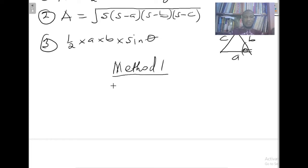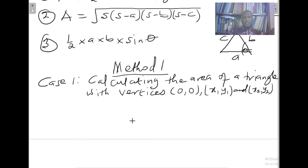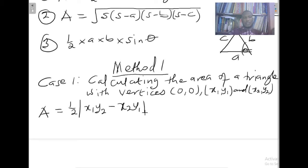Method one has two cases. Case one is a situation where the coordinates of one of the vertices are (0, 0), or one of the vertices is the origin of the Cartesian plane. For calculating the area of a triangle with vertices (0, 0), (x1, y1), and (x2, y2), we will use the formula: A equals one half times the absolute value of (x1·y2 minus x2·y1).